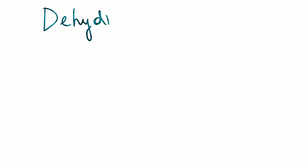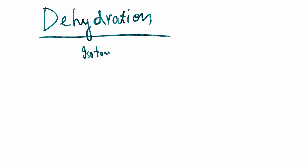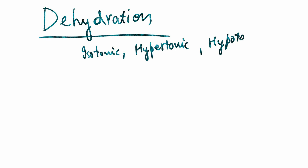Hello, today in this video I will be talking about the types of dehydration, which primarily include the isotonic type, the hypotonic type of dehydration, and the hypertonic type of dehydration.